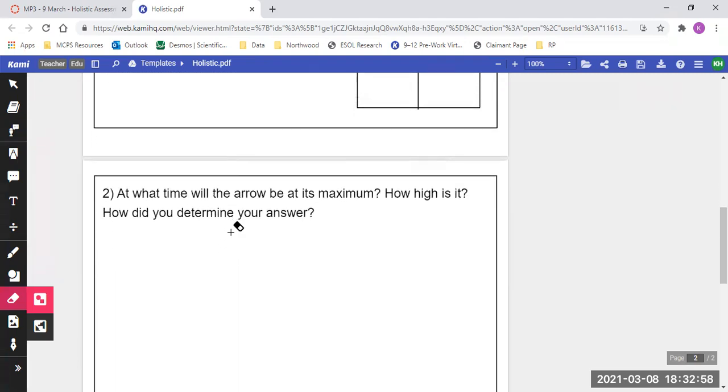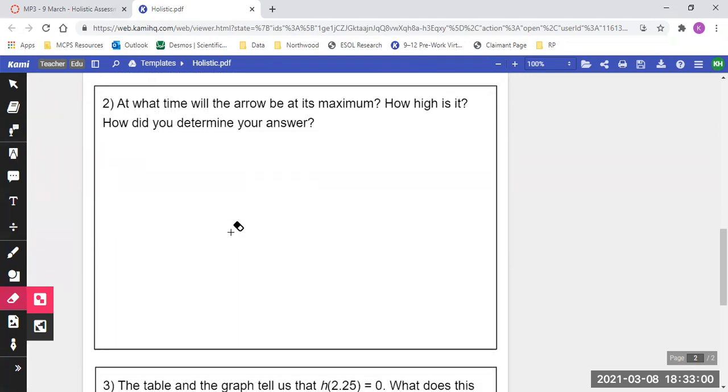Next, you'll work through number two. At what time will the arrow be at its maximum? How high is it? How did you determine your answer? You may do this however you may like, whether you're using the equation, whether you're using the graph, whether you're using the table. My only request here is that you explain yourself.